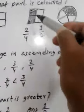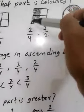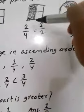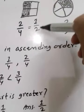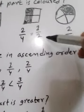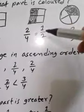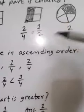And we can say, if this is 2 parts, then 1 part is shaded — 1 by 2 part, half part. So 2 by 4 part is the same as half part.